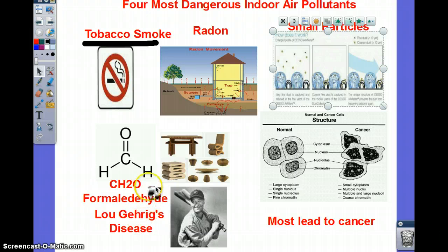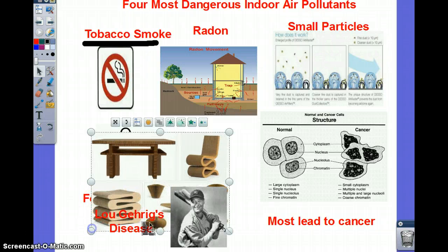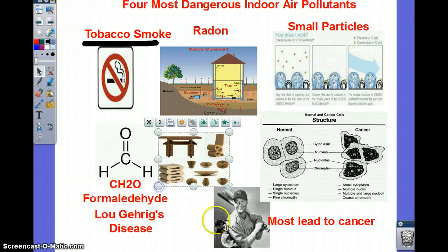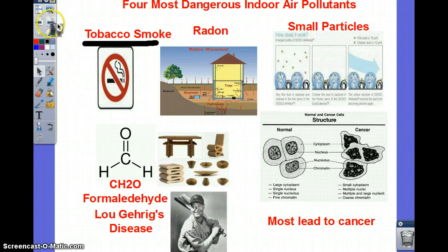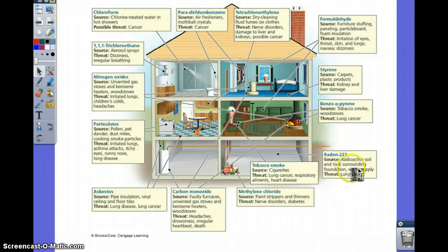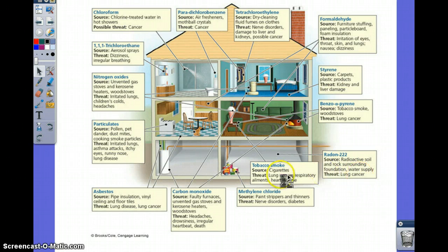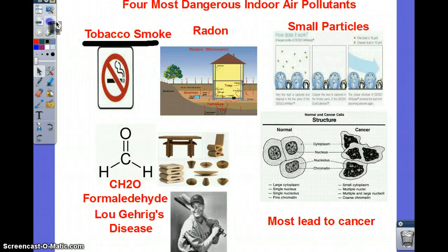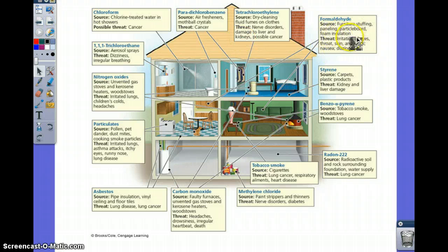Formaldehyde is linked to Lou Gehrig's disease. When you see formaldehyde, think of furniture — it's found in most woods, nail polishes, foam insulation, and paneling. Insulation is what's between your walls and helps your home become more energy efficient. Formaldehyde affects skin and lungs. Carbon monoxide also appears again, remember from cigarette smoke.